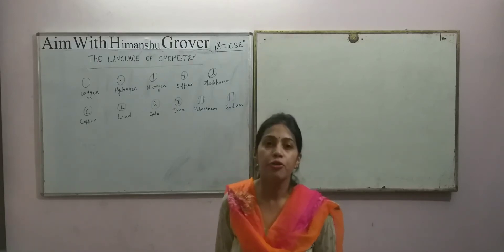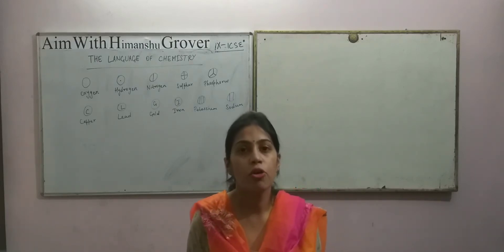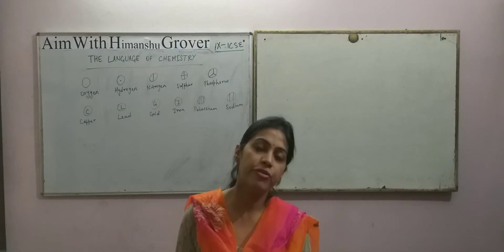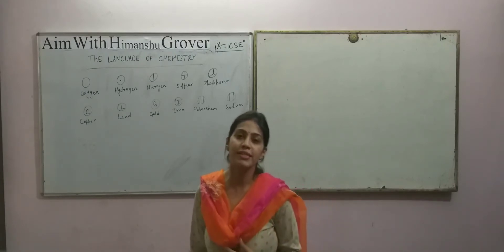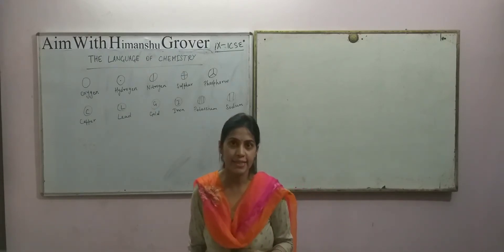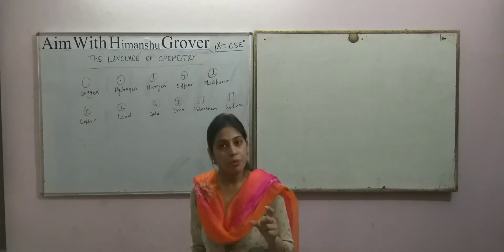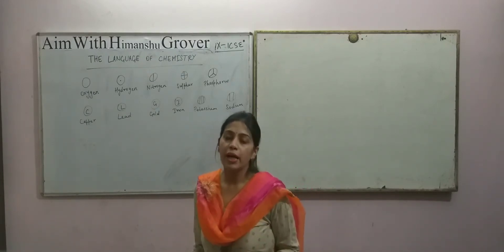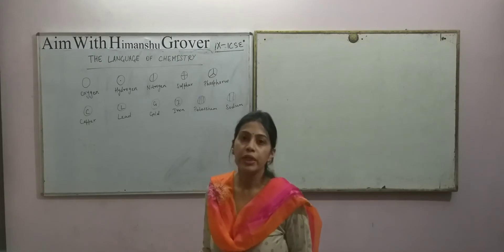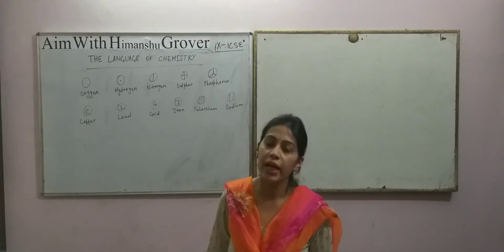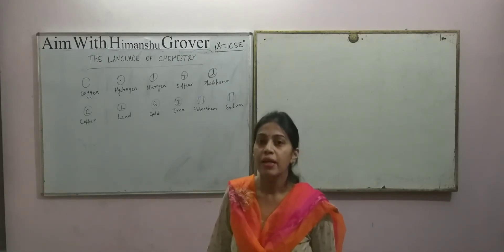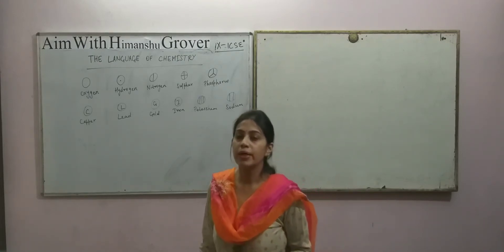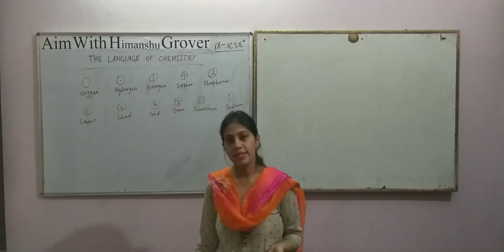Alphabets combine to form words, and the combination of words in different languages form sentences. But when the language of chemistry starts, it begins with atomic symbols. Let us see what these symbols are.